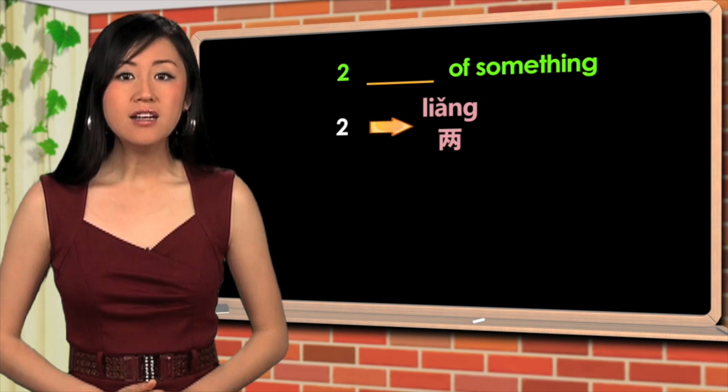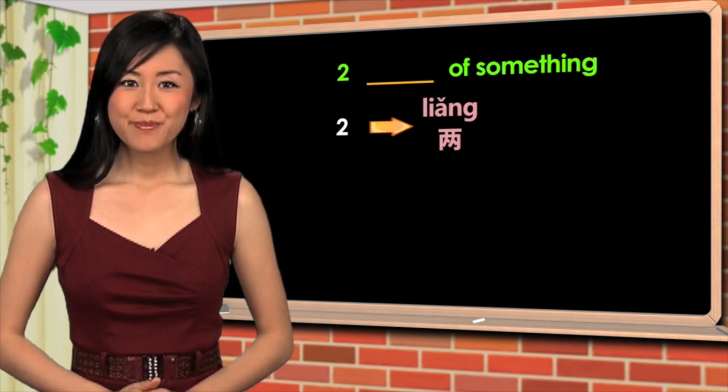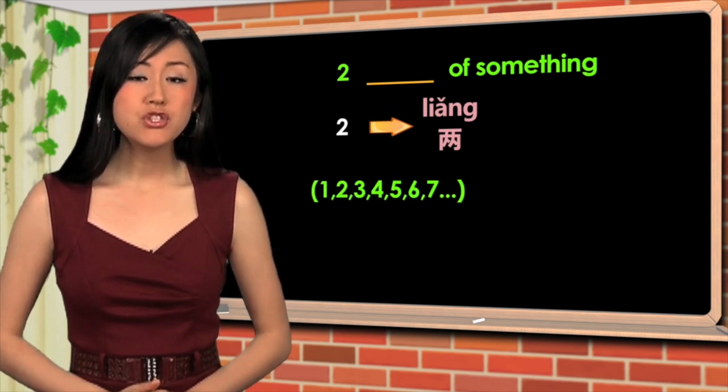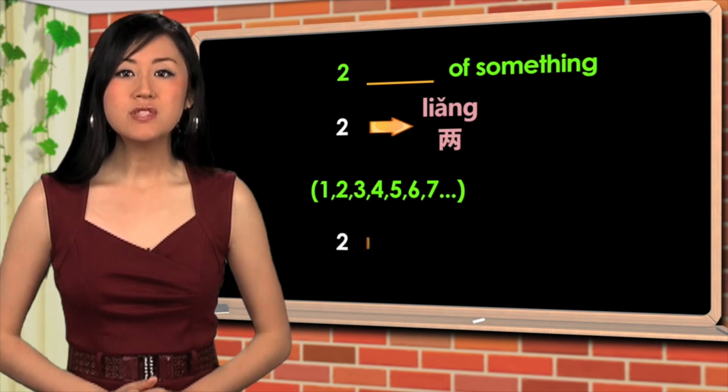you use the word liang instead of er. However, when you count one, two, three, four, five, six, seven, you say er.